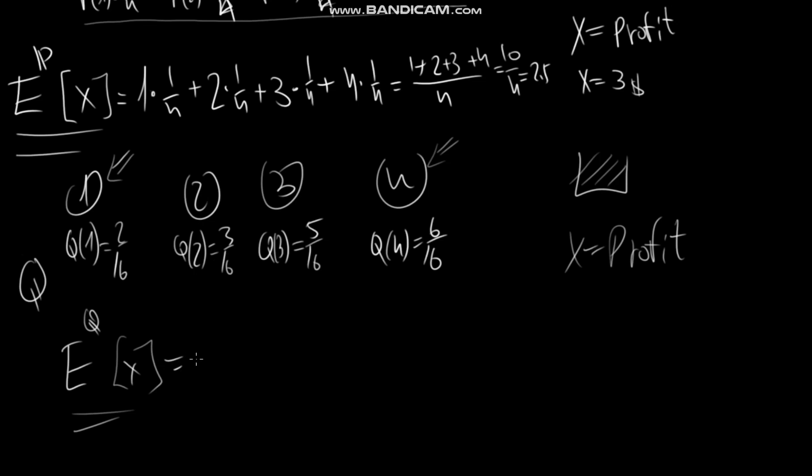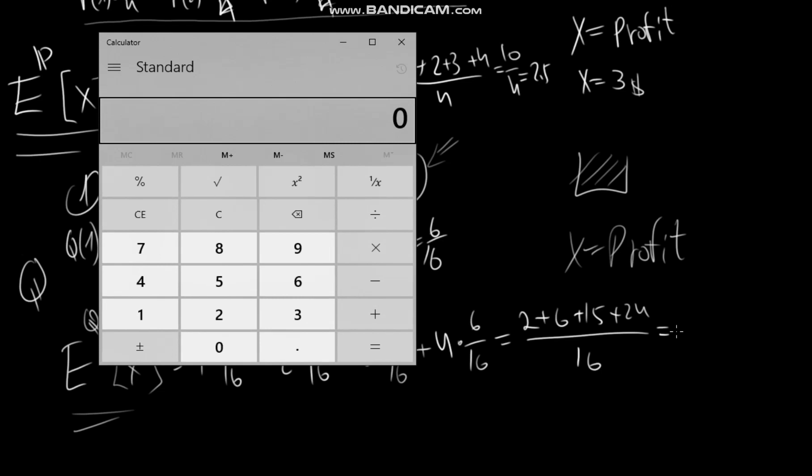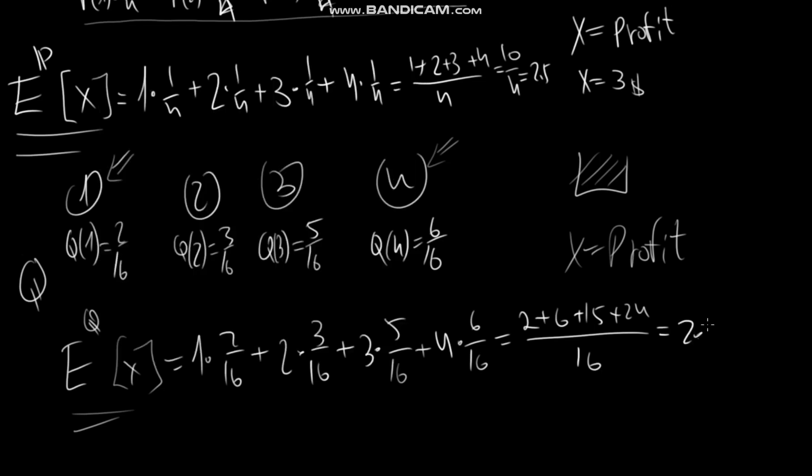We have now 1 times 2 over 16 plus 2 times 3 over 16 plus 3 times 5 over 16 plus 4 times 6 over 16. It will give us 1 times 2 is 2, 2 times 3 is 6, 3 times 5 is 15, and 4 times 6 is 24 divided by 16. And it will give us 2.9375. So this is the expected profit under the Q measure.